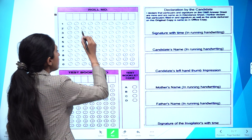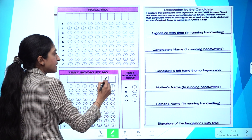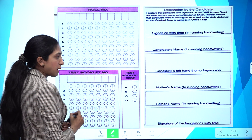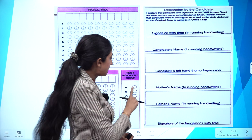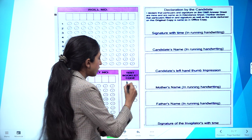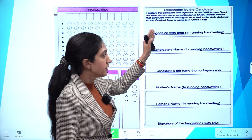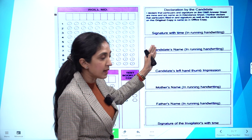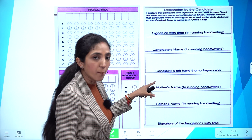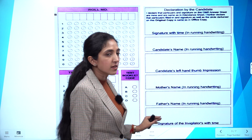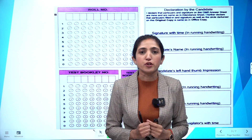In this part, first you have to write the roll number and then fill the bubbles. Write the test booklet number and fill those bubbles. Mark the test booklet code — whether it is A, B, C, or D. Then fill in your signature in running handwriting, write your name, put your left thumb impression, your mother's name, your father's name, and the invigilator's signature will be done by the invigilator present at that time.